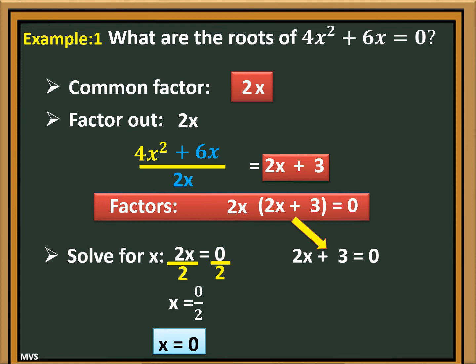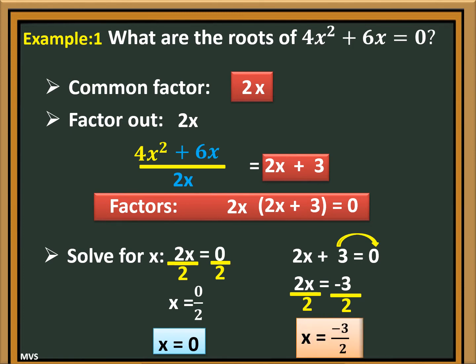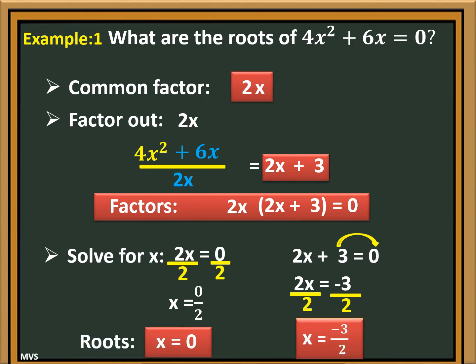Next, solving 2x plus 3 is equal to zero: transpose 3 to the right side of the equation, and it becomes negative 3. Then divide both sides by 2, so x is equal to negative 3 over 2. Going back to the problem — what are the roots of 4x squared plus 6x equals zero? The roots are zero and negative 3 over 2.